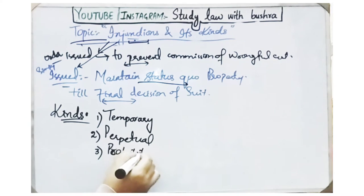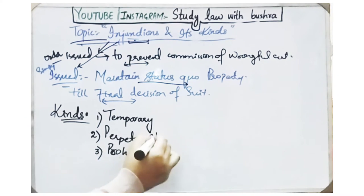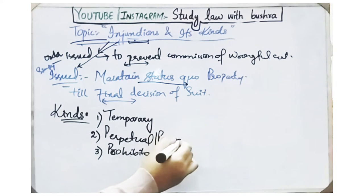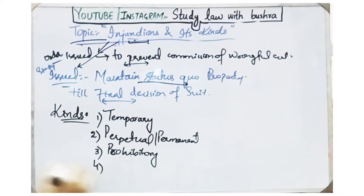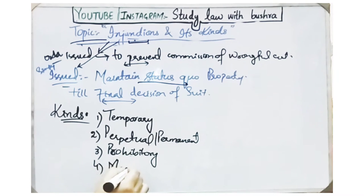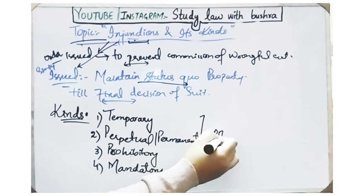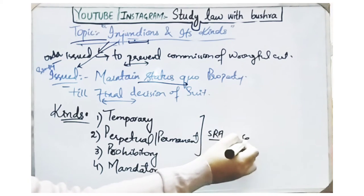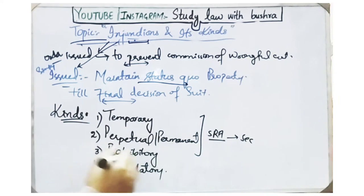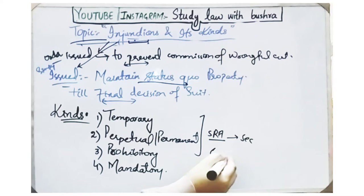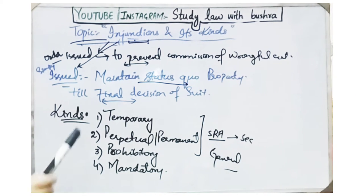Perpetual injunctions are also called permanent injunctions — wherever 'perpetual' comes, it means 'permanent'; they are the same thing. And the last one is mandatory injunctions. These are the different kinds of injunctions which are explained under the Specific Relief Act 1877 in different sections. Let's discuss these types one by one.